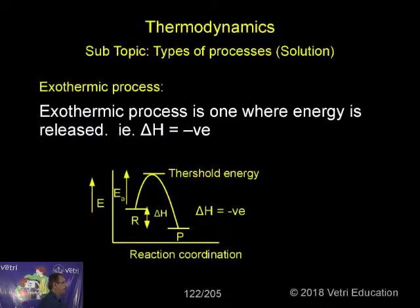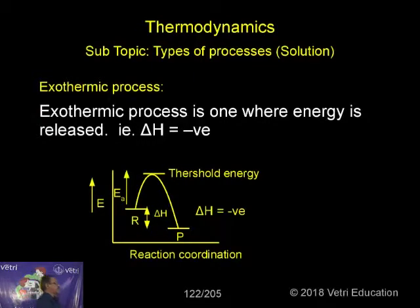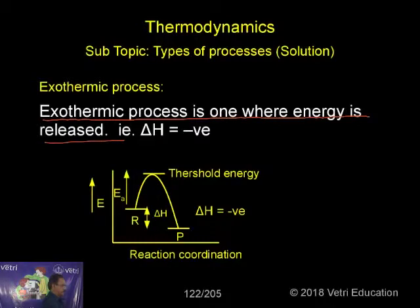Let me take exothermic and endothermic processes here. In the exothermic process, energy is released. The reactant is at high energy and the product is at low energy. The difference comes out as delta H, which is negative.